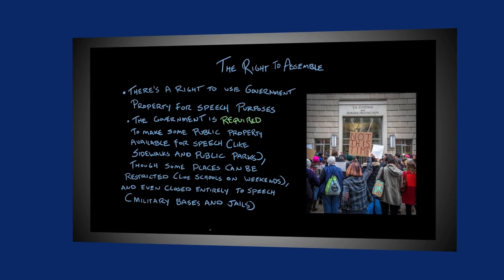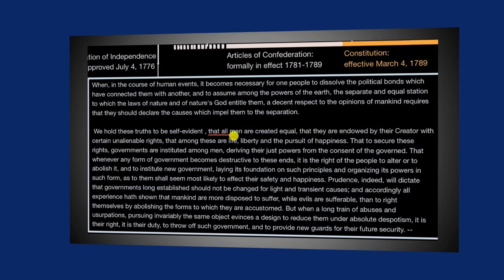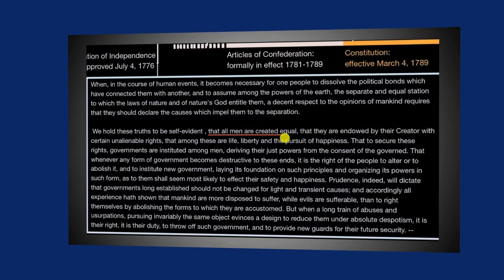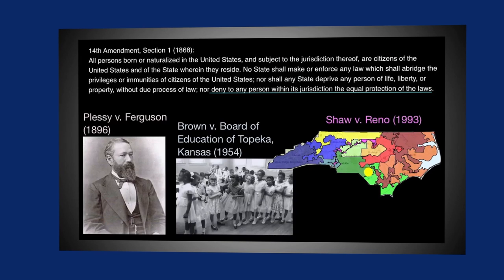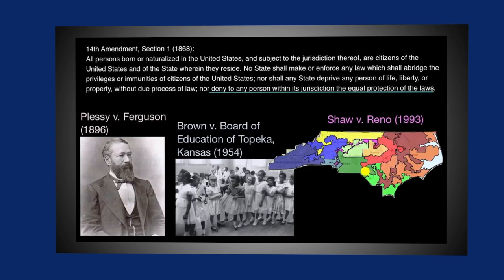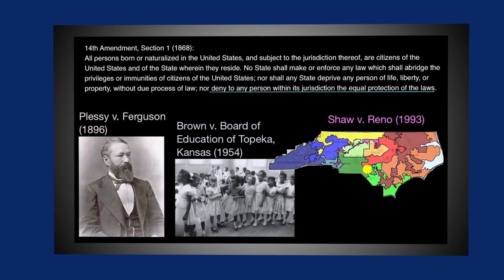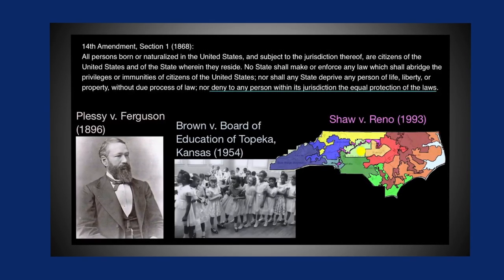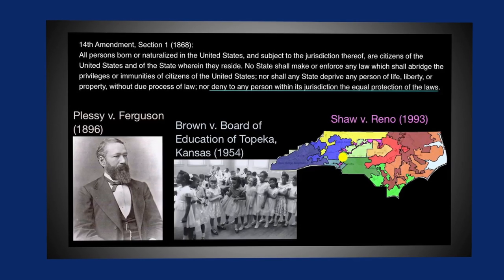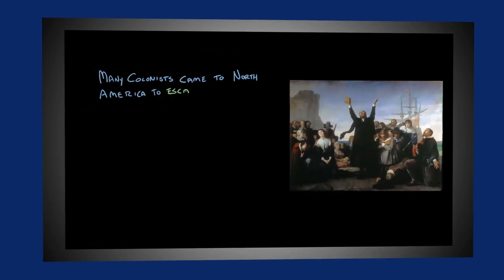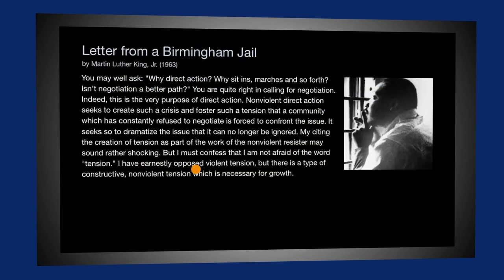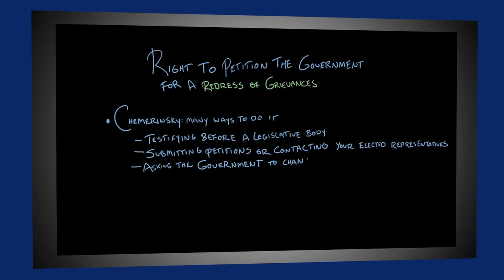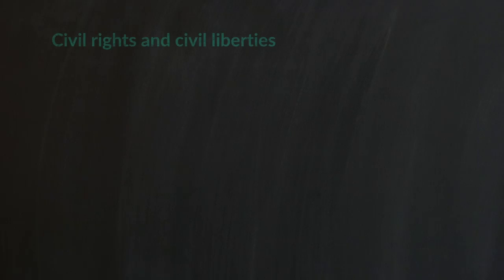Even though we have these very powerful and very high-minded words in the Declaration of Independence in 1776, not all men, and especially not all women, had these types of rights as the nation was founded in the 1780s and 1790s. How did that evolve? And how will that story continue to evolve as the United States tries to become a more perfect union?